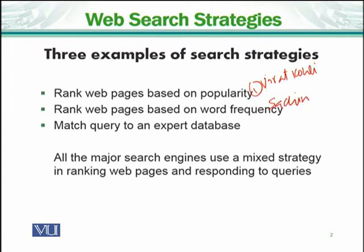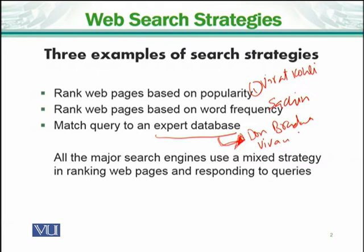Third, match query to an expert database. This is quite different from the user's perspective. The information that comes out is based on what domain experts have said. For example, for 'best player of cricket,' you would see documents where cricket experts have said who the best player is. Maybe the answer becomes Don Bradman or Vivian Richards. So it is not necessary that the current player or user's preferred answers will come out.